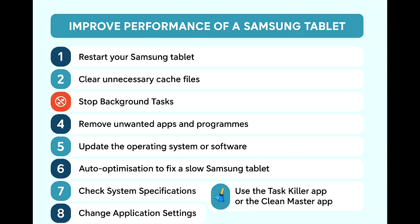Step 6: Uninstall unused apps to free up storage and memory. Step 7: Check for software updates to fix bugs and boost performance. Step 8: Use task killers cautiously to free up RAM.